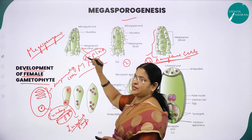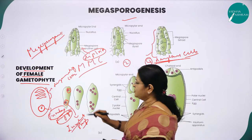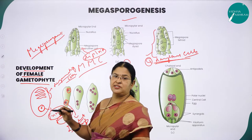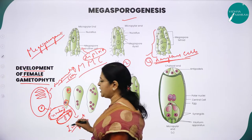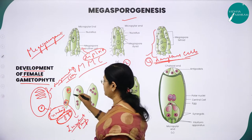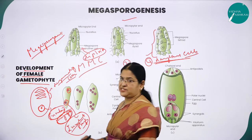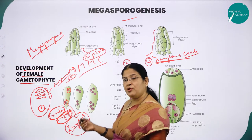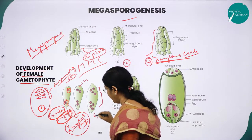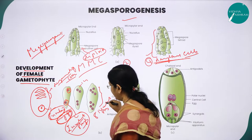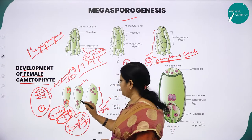The functional megaspore undergoes the first mitotic division to form the two-nucleate stage. Then, followed by two more sequential mitotic divisions, it ultimately leads to the formation of a four-nucleate stage and then the eight-nucleate stage. You can count here: 1, 2, 3, 4 at each pole — giving eight nuclei total. So the progression is: 2 to 4, then 4 to 8.